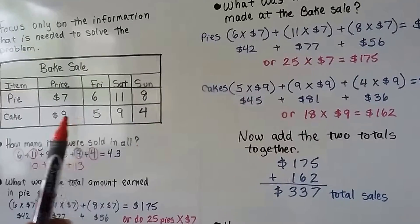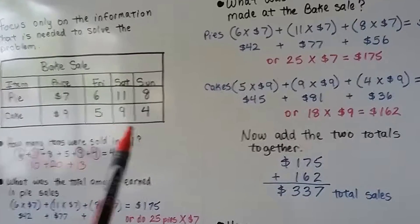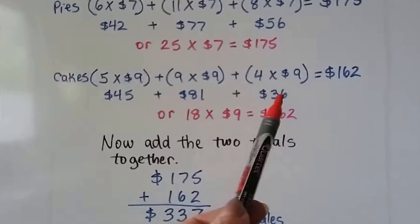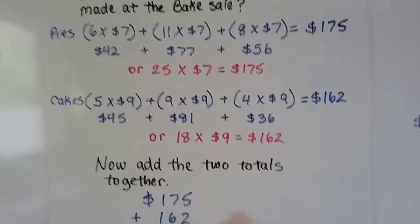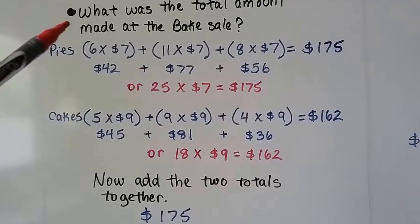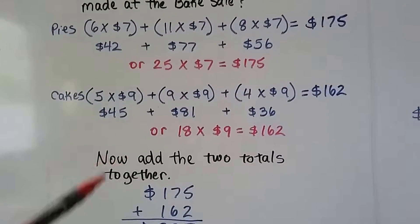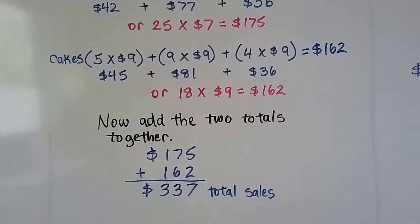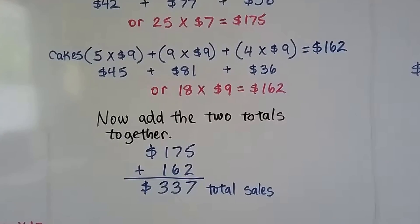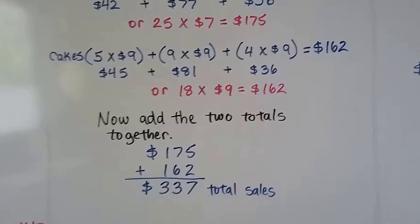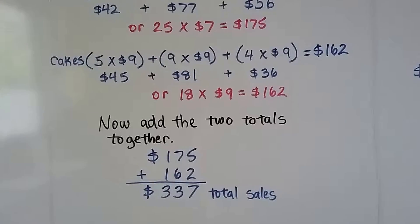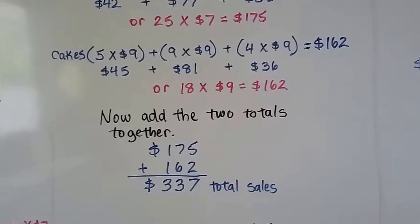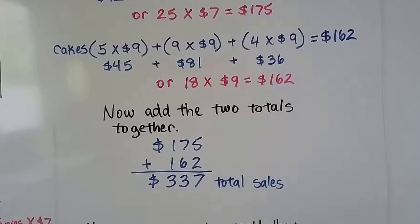We do the same thing for the cakes. They're $9 each. We do five times nine, nine times nine, and four times nine. When we add these products up, we get a total sum of $162. Now, remember, we're supposed to be finding the total amount at the entire bake sale. So, now we just add the two totals together, the $175 and the $162. We get $337 in total sales. There's lots of steps, and they're not really hard steps. There's just a lot of them. It's a bunch of easy steps that is going to make you take a little longer. Don't let this bother you. It's no big deal. It's not hard. It's just a lot.